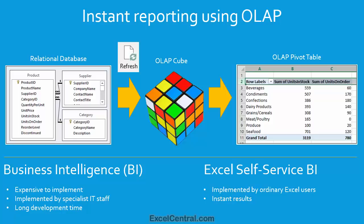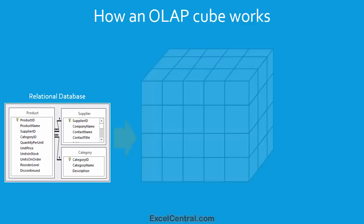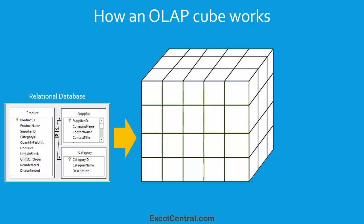Now that you understand the concept behind OLAP, let's look at how an OLAP cube works in more detail. You know that you can create an OLAP cube from an Excel data model. Conceptually, you can think of an OLAP cube as consisting of many boxes, each with a total inside it. Now let's cover some OLAP terminology. It's important you understand this terminology, because you'll find it used in some of the OLAP functions that will be used later in this session.